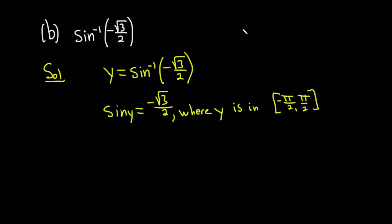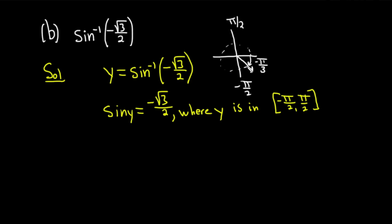Let's think about what this angle could be. Here's a picture of the unit circle — here's π/2, here's negative π/2. We're in those two quadrants. It's going to be negative π/3. You don't want to use 5π/3, which would also give you this value, but that's not valid because your answer must be between negative π/2 and π/2. The answer is y equals negative π/3.